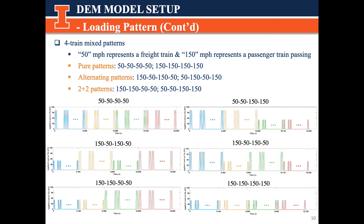We generated 4 train traffic patterns by combining freight or passenger trains in different sequences. In these plots, 50 represents a freight train passing, and 150 represents a passenger train passing. Each train has 32 axle loading processes. We classify them into three patterns: pure patterns, which consist of 4 same train loadings — only freight trains or only 4 passenger train loadings; alternating patterns, where freight and passenger trains come alternately; and the 2-plus-2 pattern, for example 2 passenger trains followed by 2 freight trains, or 2 freight trains followed by 2 passenger trains. In total, 6 traffic patterns are studied here.